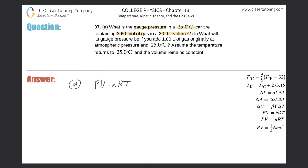We're asked to find pressure, so let's solve for P: P = nRT/V. Now, an important note: any time you use the ideal gas law, the pressure will be absolute pressure. But this time they're specifically asking for gauge pressure, so we need to keep that in mind. Plugging in: n = 3.6 moles, R = 8.31, and temperature must be in Kelvin, so 25 + 273.